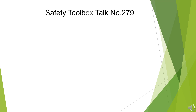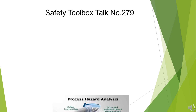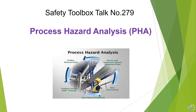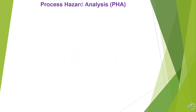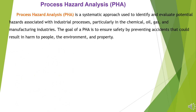Safety Toolbox Talk No. 279: Process Hazard Analysis, PHA. Process Hazard Analysis, PHA, is a systematic approach used to identify and evaluate potential hazards associated with industrial processes.